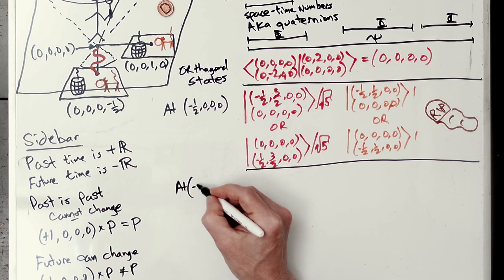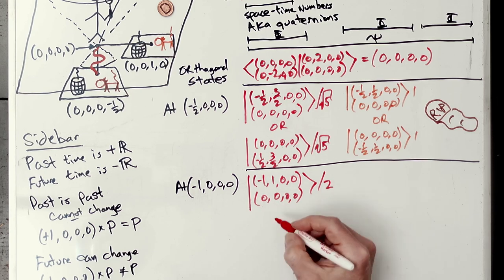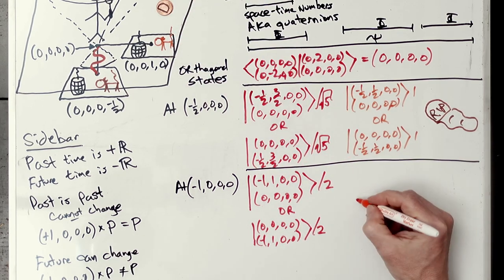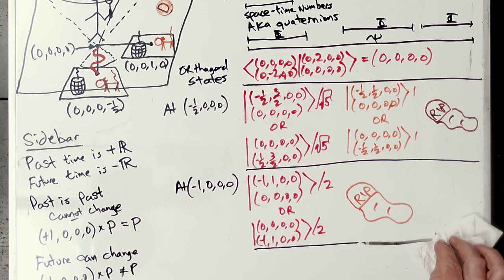Now, at minus one, new numbers, new normalization factors. And the orange cat is dead. So sad.